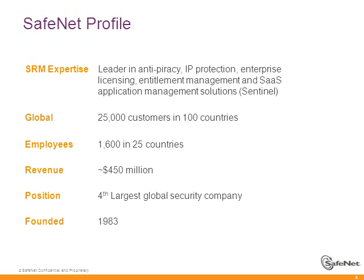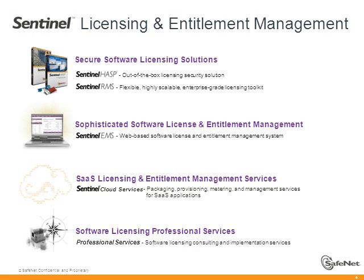The obligatory background on SafeNet. For some people you may know this already, but we are the leader in anti-piracy and IP protection. As a company combined, we do around $450 million, which makes us the fourth largest global security company. We're based on the East Coast, just north of Baltimore, with around 1,600 employees. The SRM division you're talking to today does around $100 million of that $450 million in revenue.